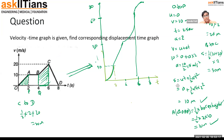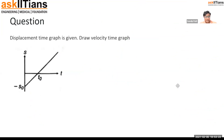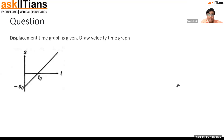So to convert a VT graph to an ST graph, calculate displacement using either kinematic equations or the area under the curve. The shape of the ST curve reflects whether velocity is constant (straight line), increasing (upward curve), or decreasing (curve with decreasing slope).